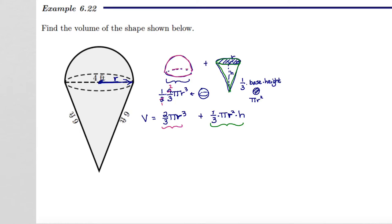So let's get that calculation down. First, what is the radius? I know the whole distance across is four, so that tells me the radius for both the upper hemisphere and the cone is half of four, or two. So my r value is going to be two.